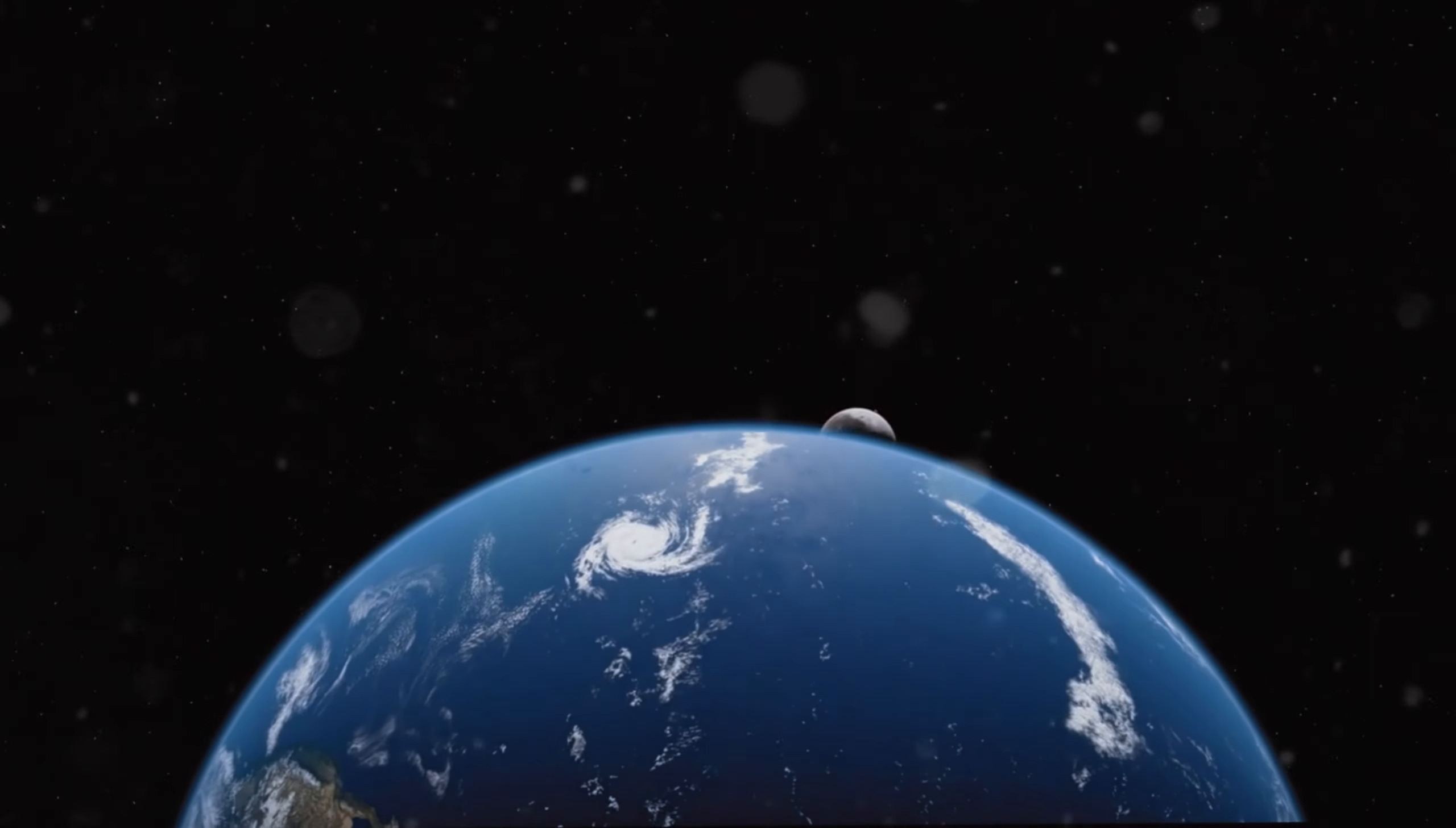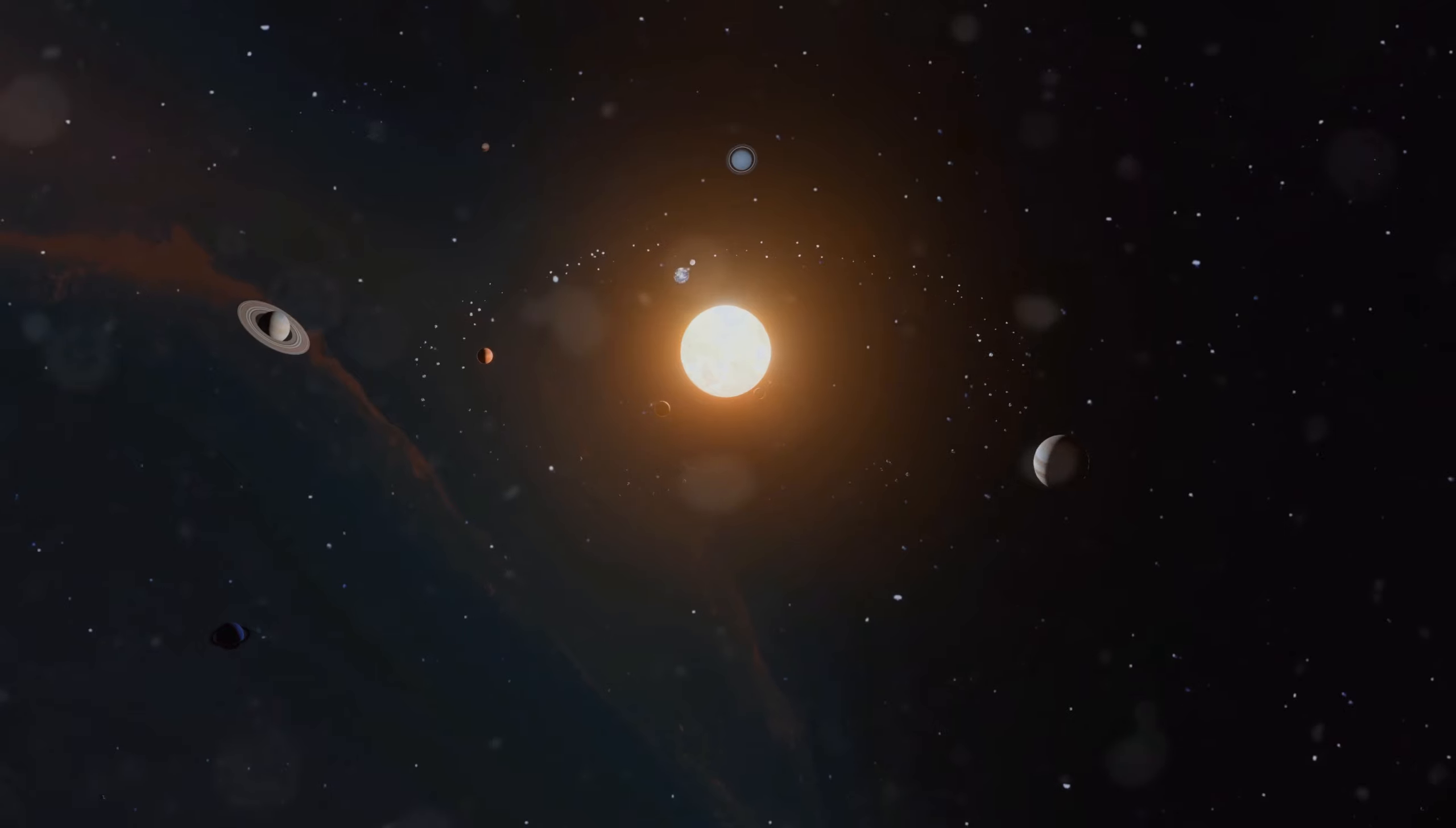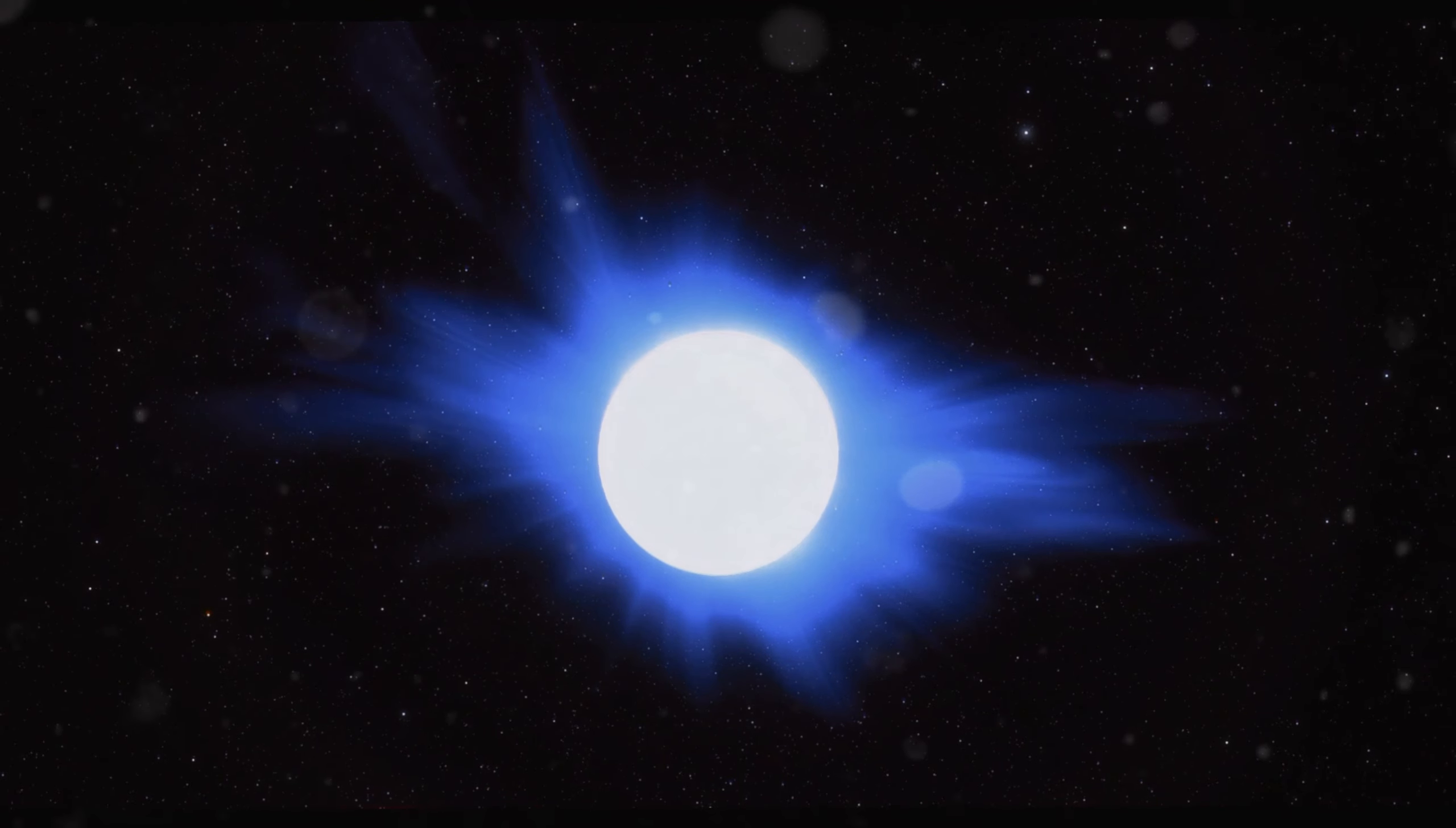In 2029, Apophis will come closer to Earth than all geostationary satellites. This means that this asteroid will fly below the satellites and pass us by. But Apophis will return. It's a near-Earth asteroid that repeatedly crosses our orbit. Experts suspect that the impact is only a matter of time.